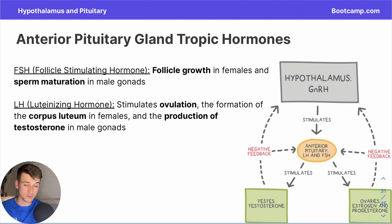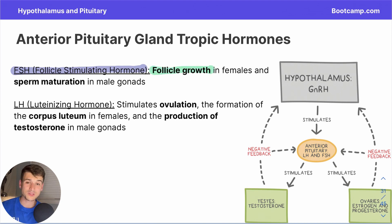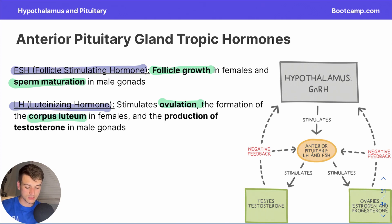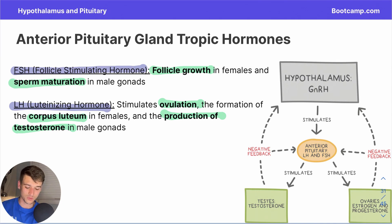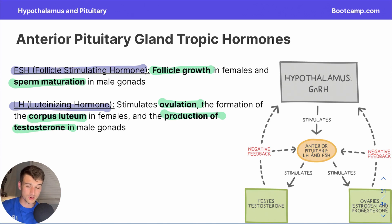Let's look at the tropic hormones. FSH, or follicle-stimulating hormone, has two functions: in females it stimulates the growth of the follicle, and in males it matures sperm. A memory trick: FSH looks like the word fish — fish swim, sperm swim. Another tropic hormone is LH, or luteinizing hormone. LH stimulates ovulation, the formation of the corpus luteum in females, and production of testosterone in male gonads. Memory trick: LH can stand for large and hairy — two traits that increase with more testosterone.